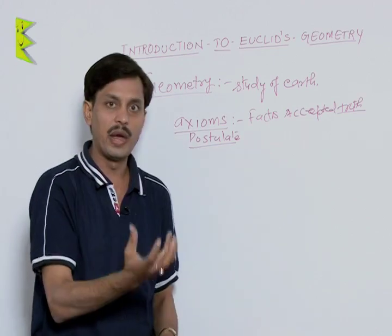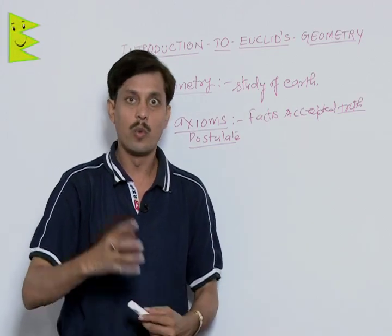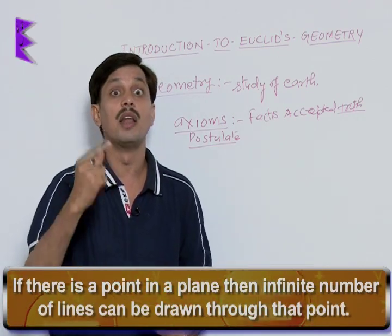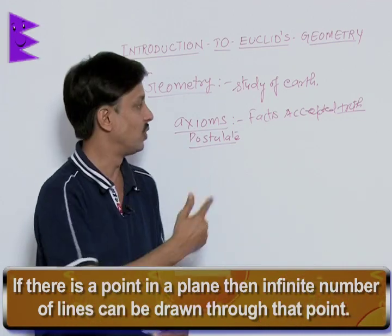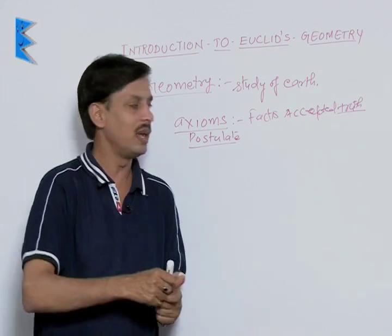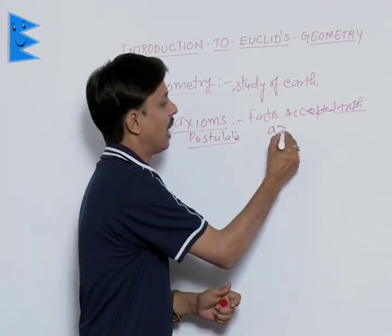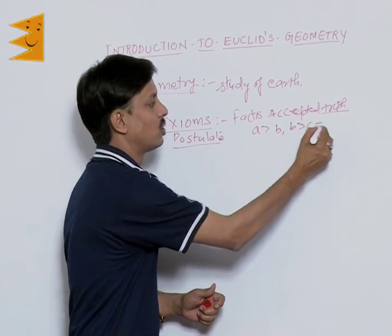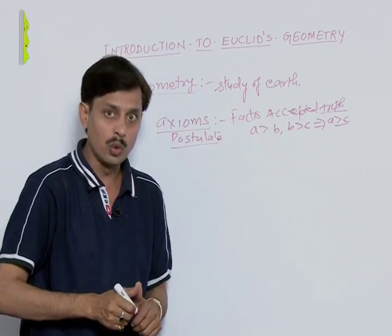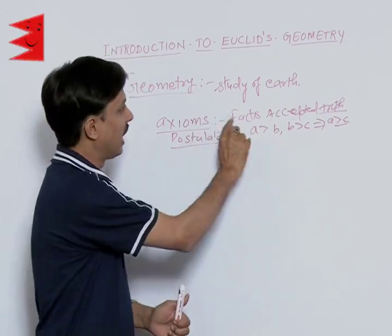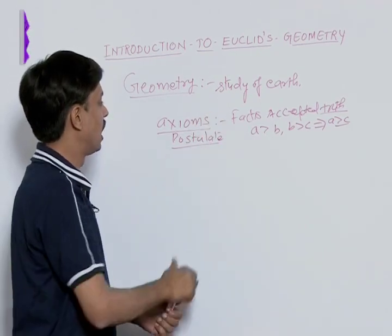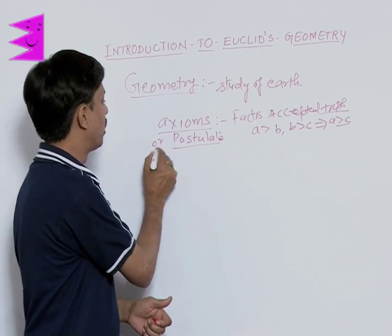An axiom is a fact which is true. For example, if there is a point on a plane, you can draw infinite lines passing through that point — so it is a fact. Another example: if a number A is greater than B, and B is greater than C, then this implies A is greater than C. So this fact we accept as a truth. Any fact which is an accepted truth is known as an axiom or postulate.